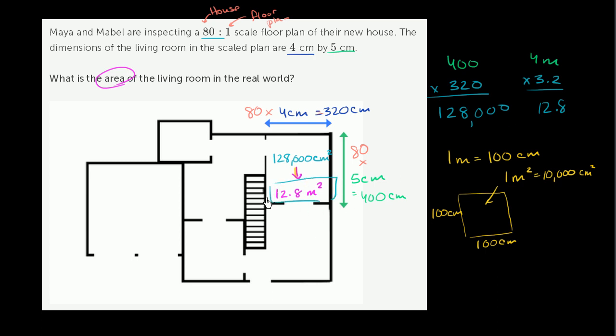But either way, the area of the living room in the real world in meters squared, or square meters, is 12.8.